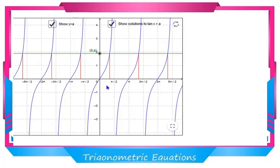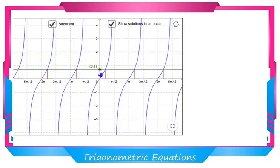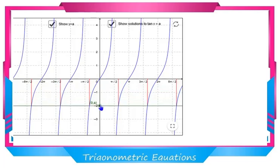These are the two principal solutions where θ is the angle satisfying tan x = A. When A is negative, tan is negative in the second and fourth quadrants, so the two principal solutions are π − θ and 2π − θ, where θ satisfies tan θ = |A|.